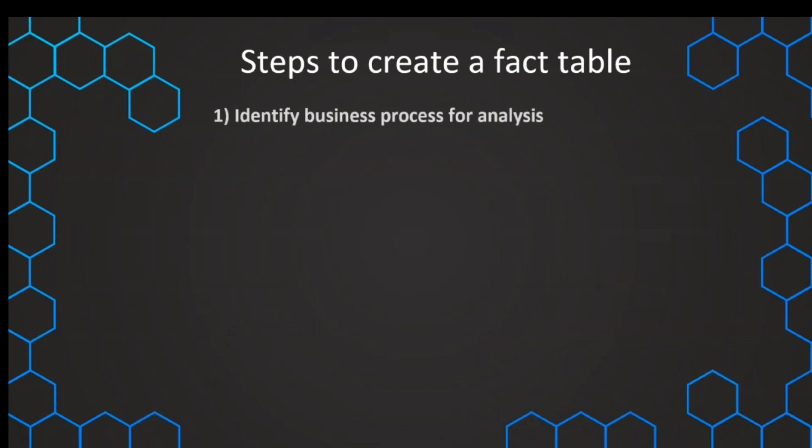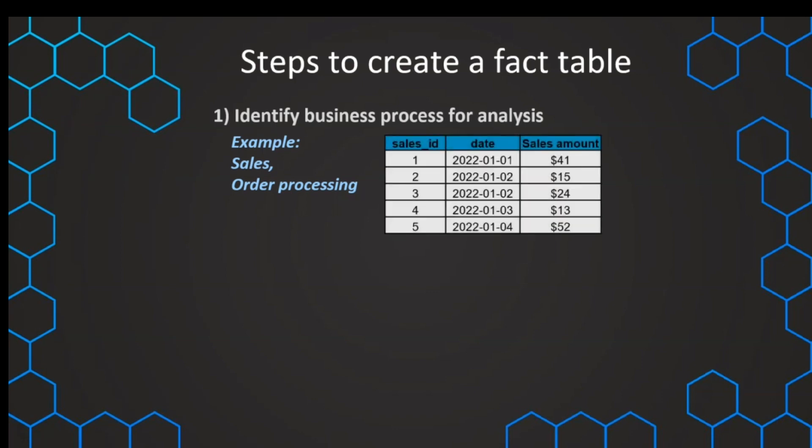First, we want to start with identifying the actual business process that we want to analyze. For example, this can be we want to analyze our sales, we want to analyze the order processing, the order fulfillment, or anything else that is a business process that we want to analyze. For example, as we've seen in here, this can be a sales table and we have the different aspects included in here.